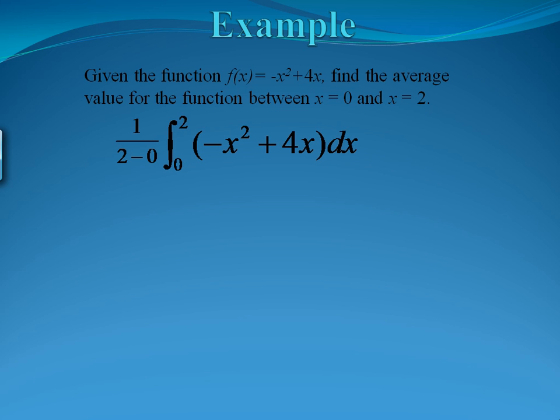When we set up our integral, it'll look like this. We have the integral from 0 to 2 of our f of x, and in the front, we're multiplying by 1 over b minus a. That's what gives us the average value.